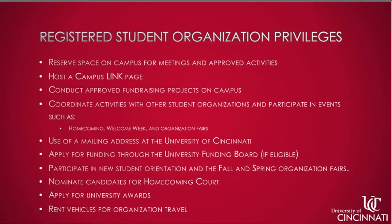This is a comprehensive list of privileges available if your organization's re-registration submission is approved. You can reserve space on campus for meetings and approved activities, host a Campus Link page, conduct approved fundraising projects on campus, coordinate activities with other student organizations, and participate in events such as homecoming, welcome week, and organization fairs. You may also use a mailing address at the University of Cincinnati, apply for funding through the University Funding Board if eligible, participate in new student orientation and the fall and spring organization fairs, nominate candidates for homecoming court, apply for university awards, and rent vehicles for organization travel.